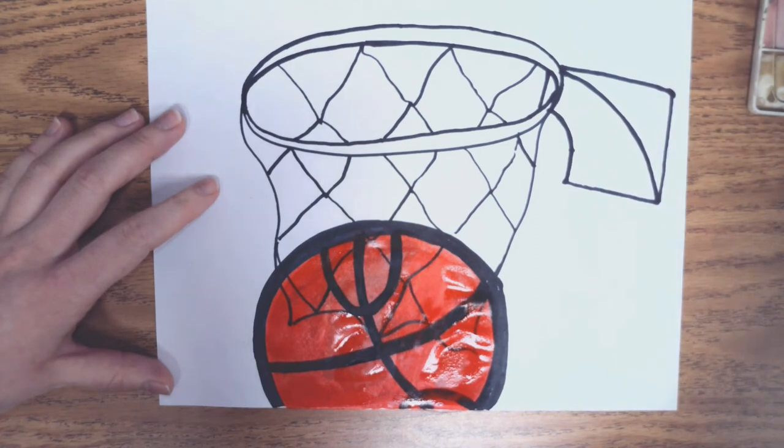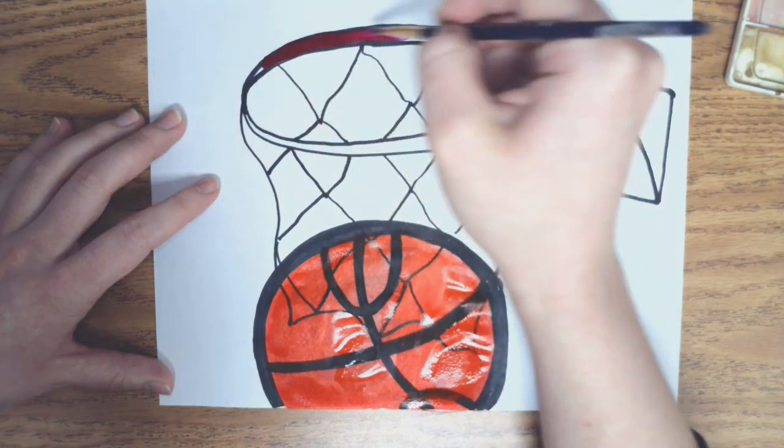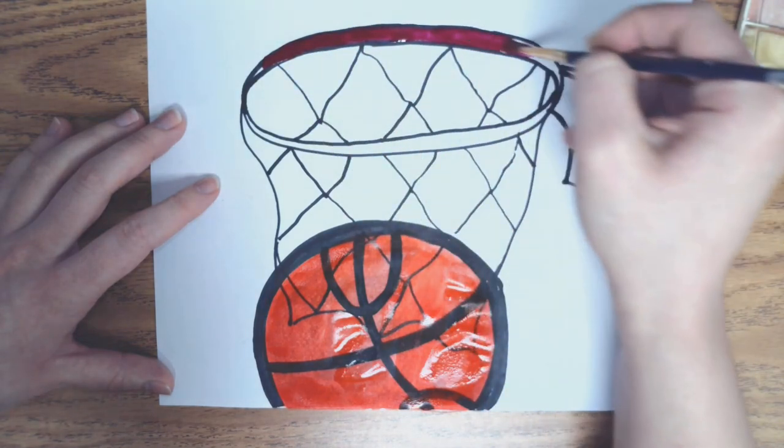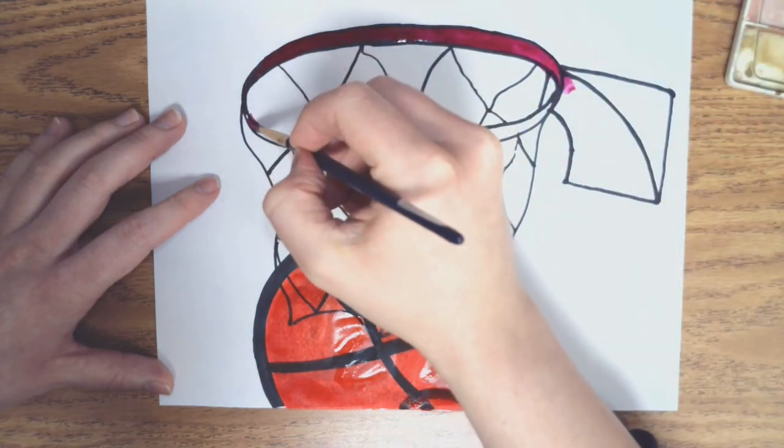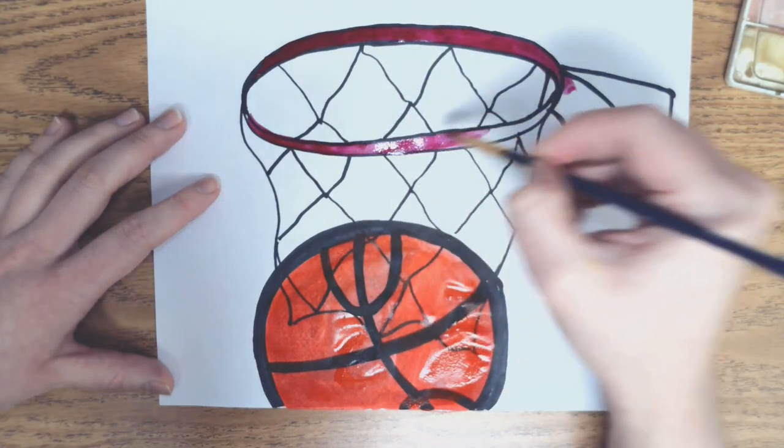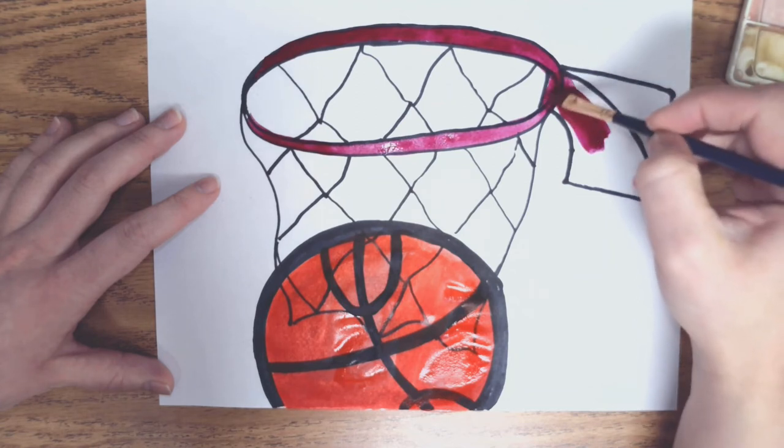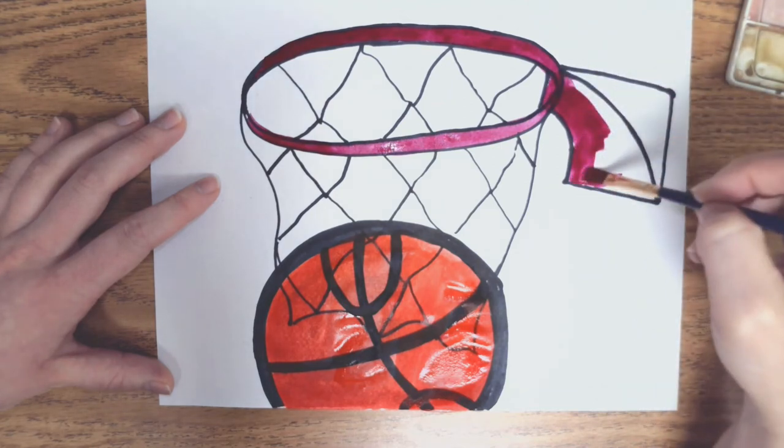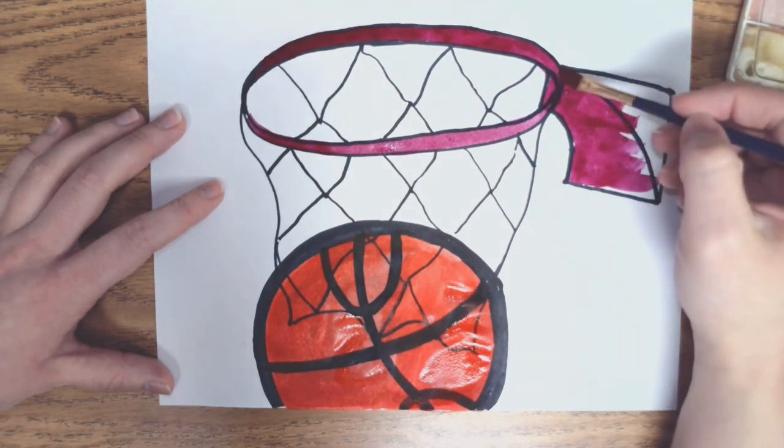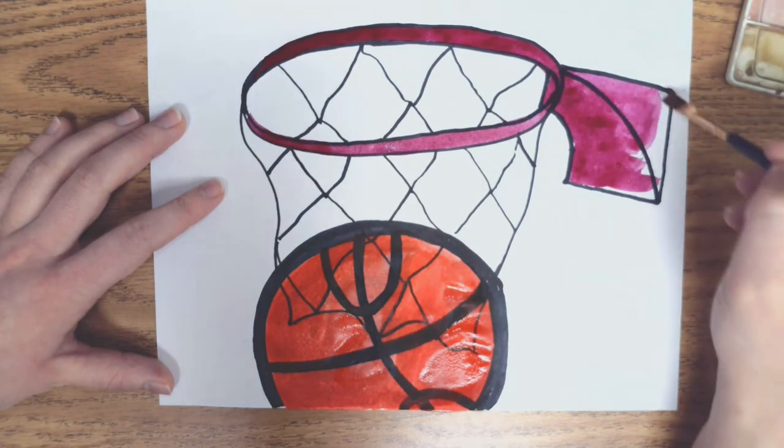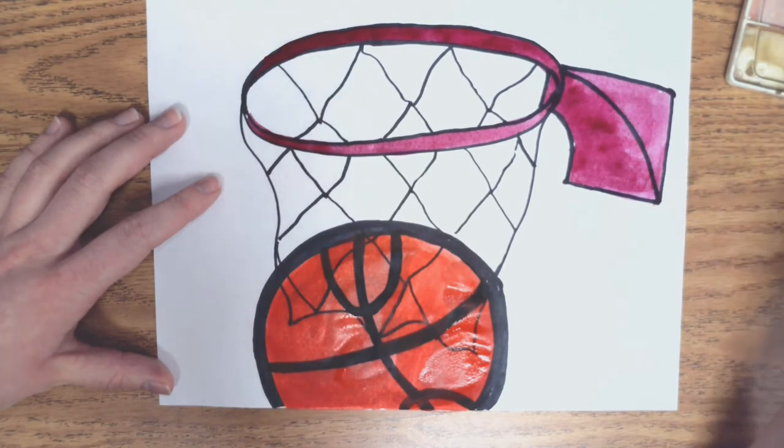And I'm going to do red for my hoop up here. So I'm going to try to stay as neatly in my line as I can. And then I'm also going to do that little piece holding it. Now if you want to add more details like the backboard over here, feel free to do that. You can add audience if you want to do some people's faces. Whatever you want to make this unique for you.